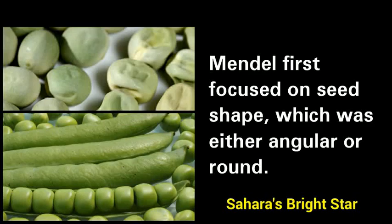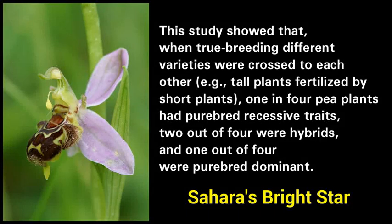Mendel first focused on seed shape, which was either angular or round. This study showed that when true-breeding different varieties were crossed to each other — for example, tall plants fertilized by short plants — one in four pea plants had purebred recessive traits, two out of four were hybrids, and one out of four were purebred dominant.